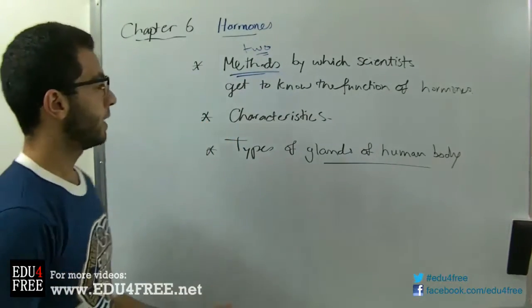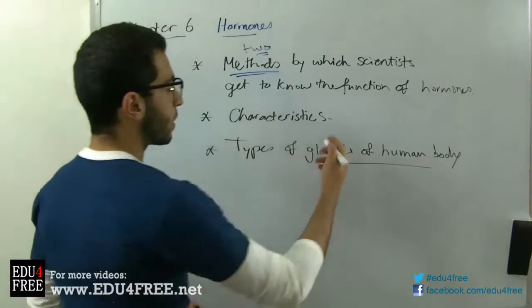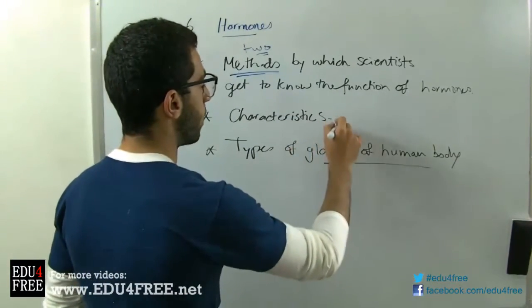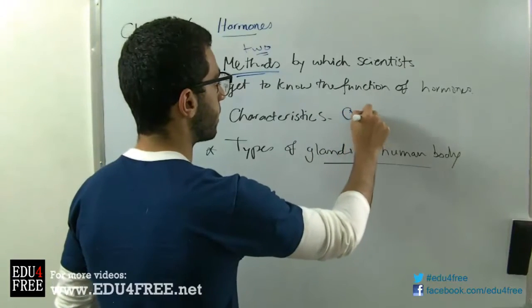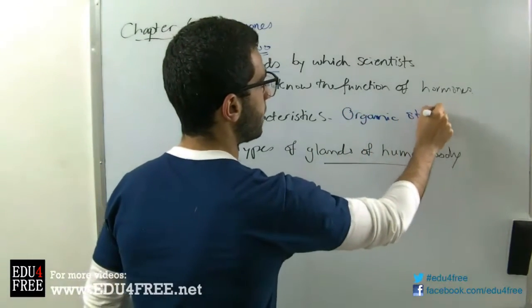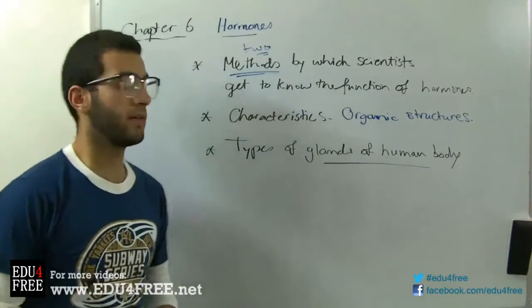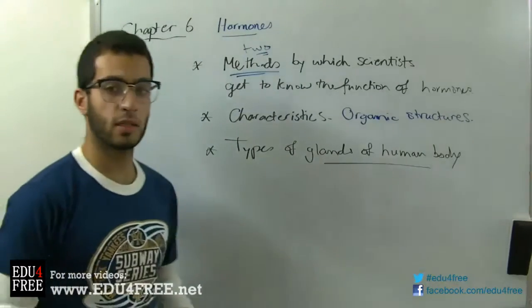Next thing, the characteristics of hormones. We have that hormones are organic structures. They can be proteins, they can be steroids which are lipid derivatives, and they can be amino acids.